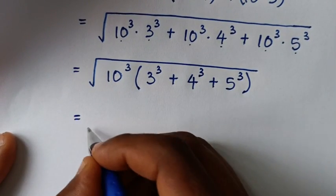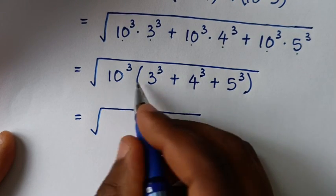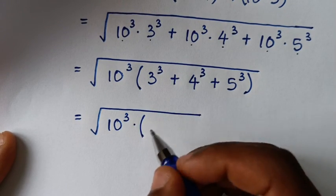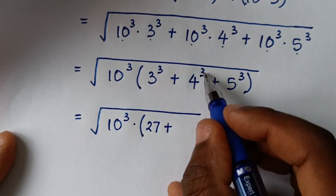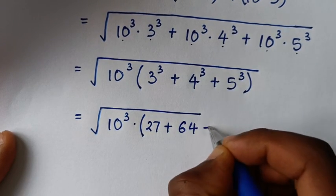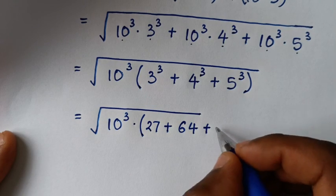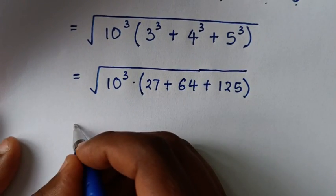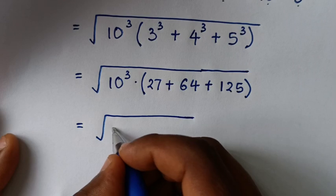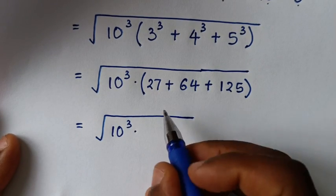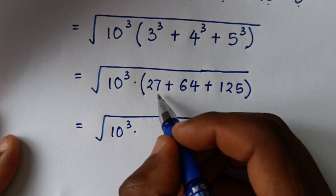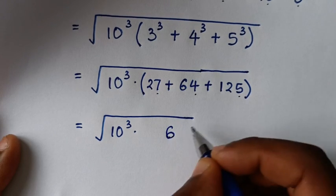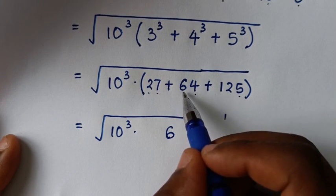In the next step it will be equal to the square root of 10 to the power 3 times the bracket: 3 to the power 3 is 3×3×3 = 27, plus 4 to the power 3 is 4×4×4 = 64, plus 5 to the power 3 is 5×5×5 = 125. So we have the square root of 10 to the power 3 times the sum inside the bracket.